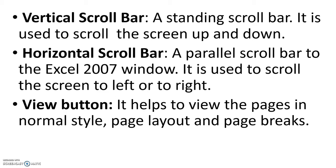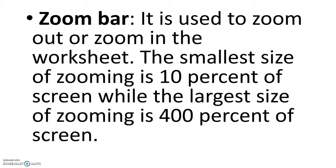The Vertical Scroll Bar is used to scroll the screen up and down. The Horizontal Scroll Bar is used to scroll the screen to the left or to the right. The View button helps to view pages in normal style, page layout, and page break — normal style is the default setting. The Zoom Bar is used to zoom in or zoom out the worksheet. The smallest zoom size is 10% of screen and the largest is 400% of screen.